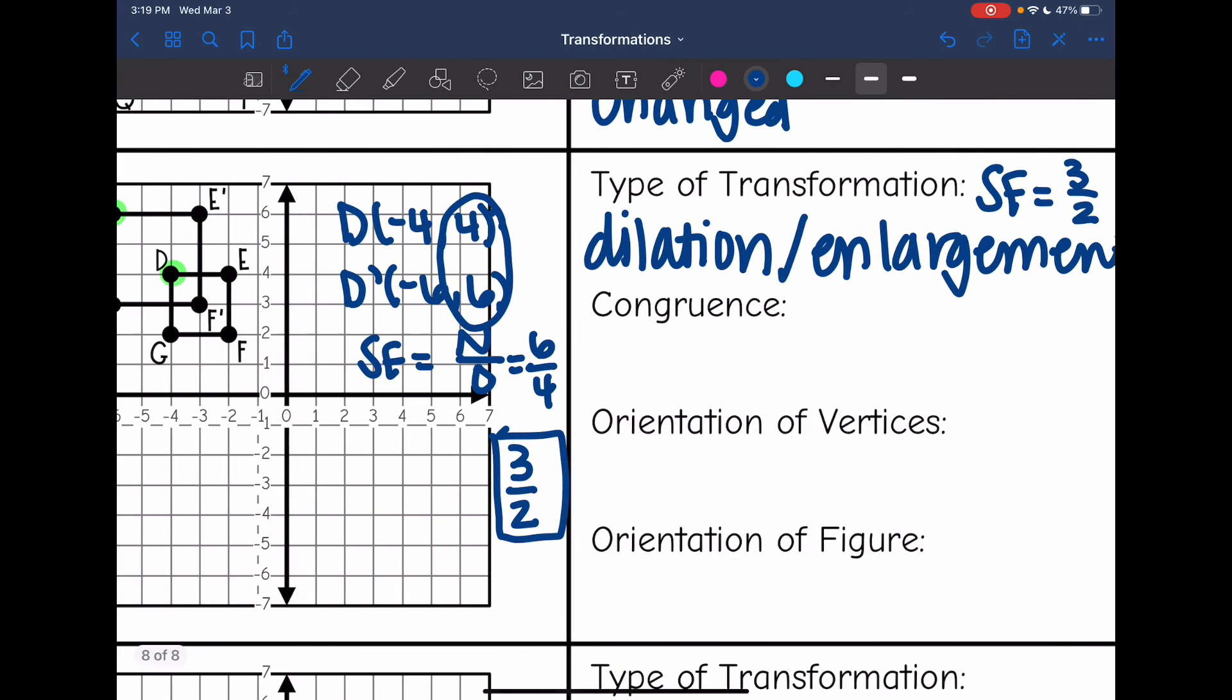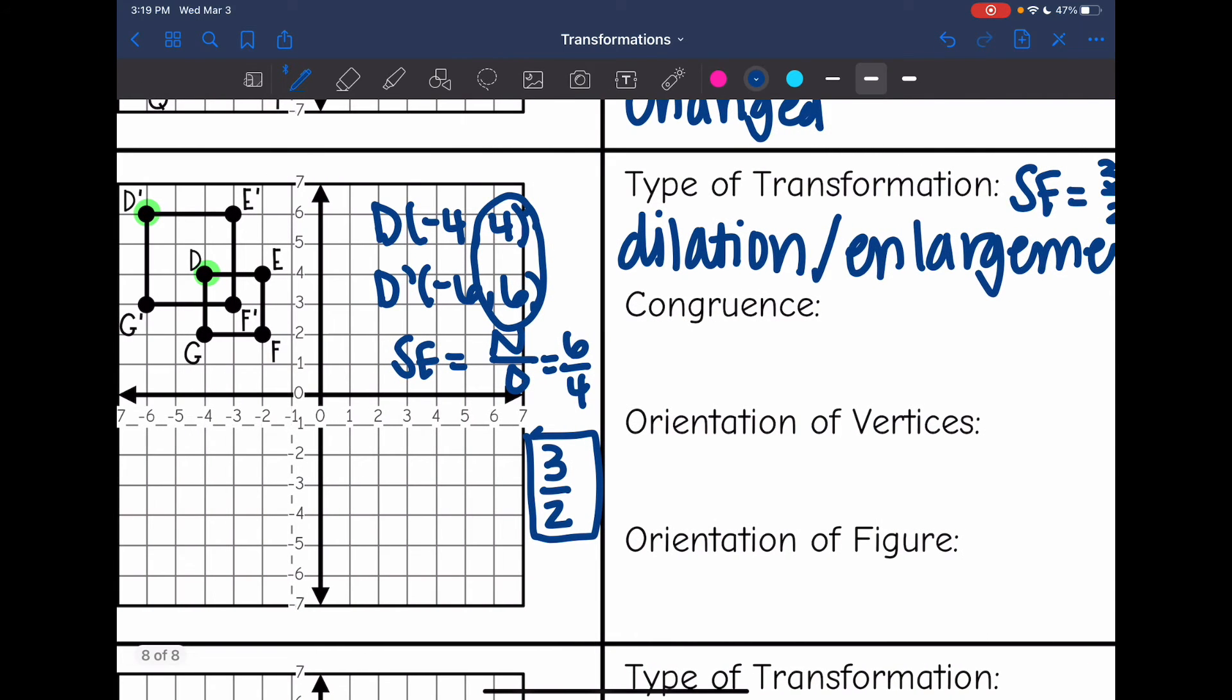So our congruence in this transformation changed. That's the whole point of a dilation. You change sizes so the size does not stay the same. It changed. And then our orientation stays the same for both of them in a dilation because we're not turning or flipping at all.